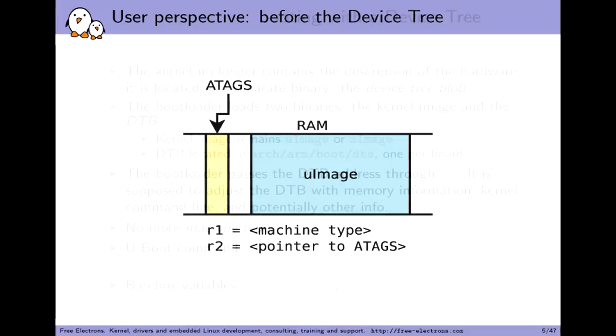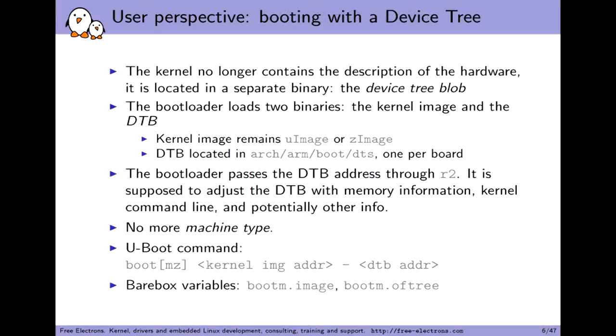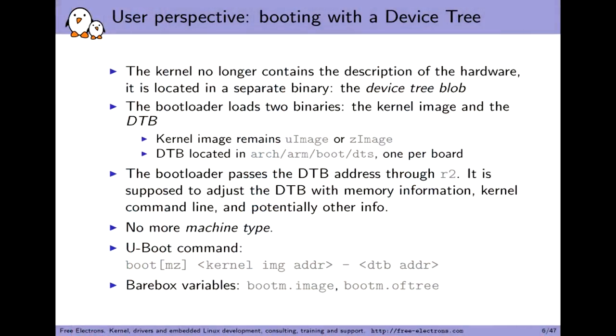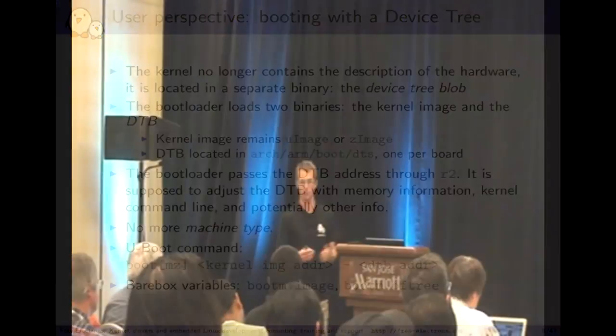With the device tree, the idea is to take out the description of the hardware from the kernel itself and put it into a separate data structure. The kernel continues to have drivers that know about hardware details, but it does not know exactly how your SoC on your board is laid out, which components it has, how they are connected with each other. The device tree is mainly here to describe the tree of devices that compose your processor and the board around it. This data structure — the device tree blob, a binary form of the device tree — is to be loaded into memory next to the kernel image by the bootloader.